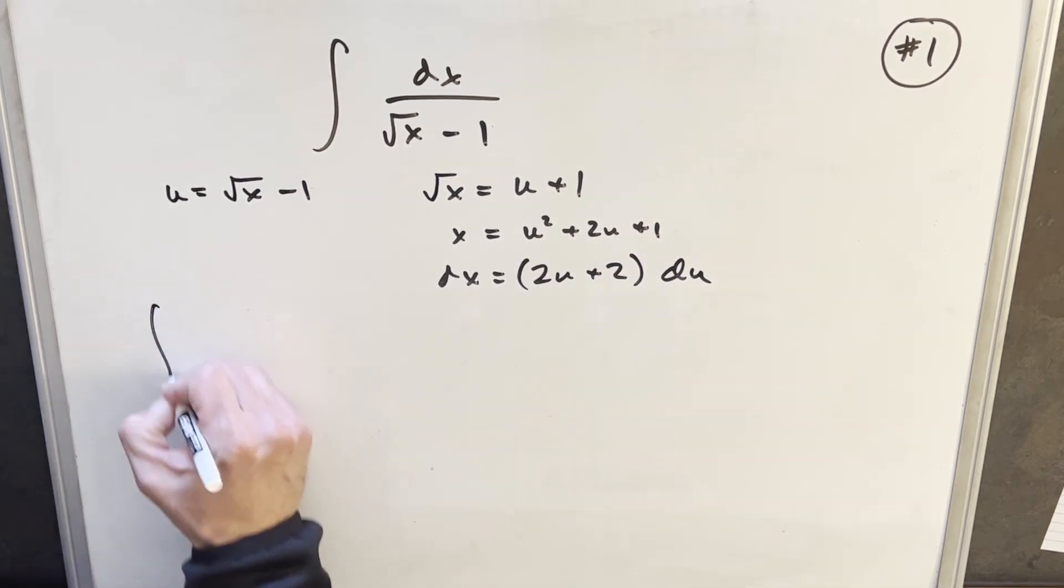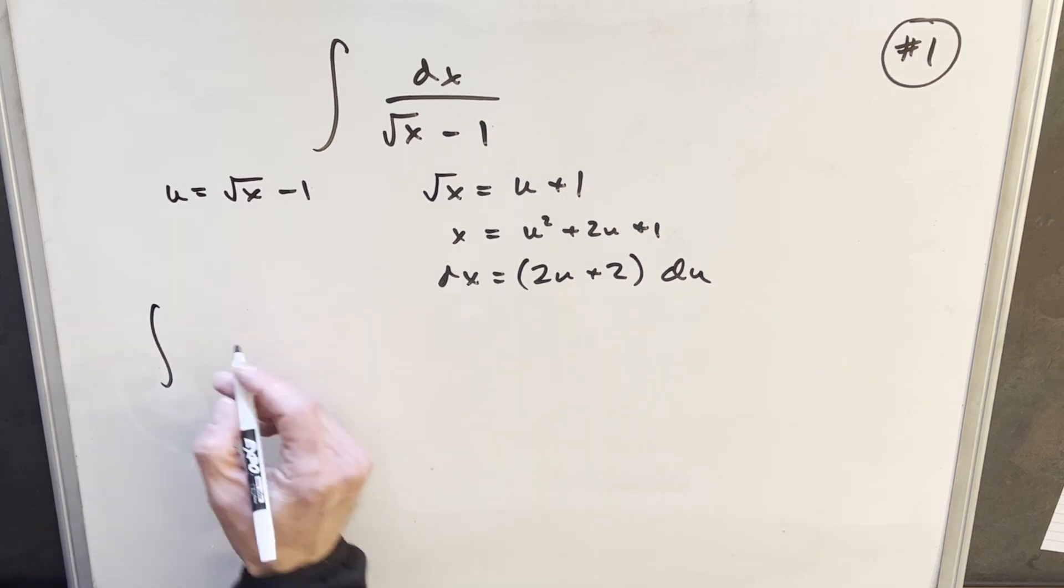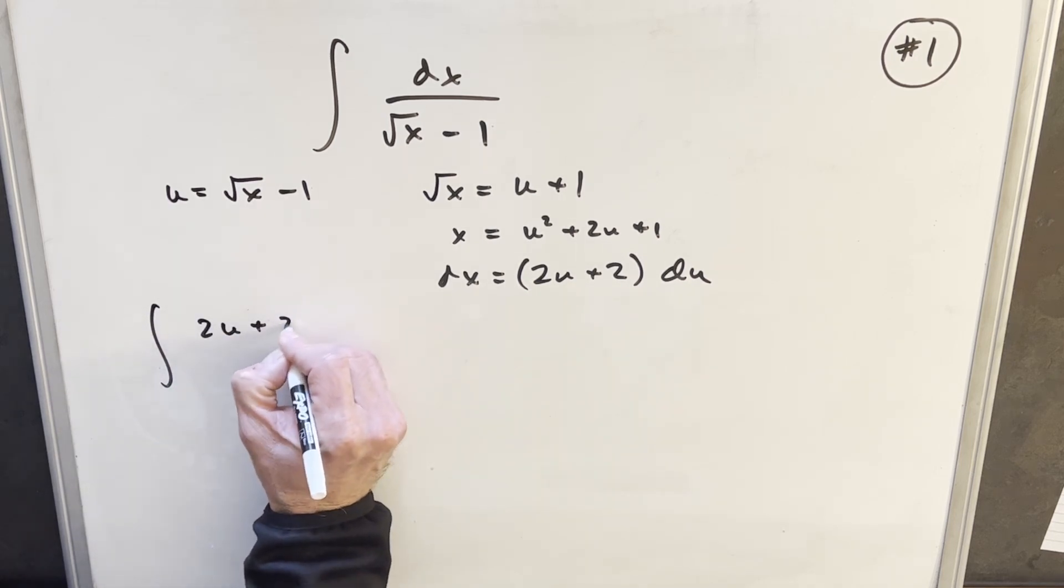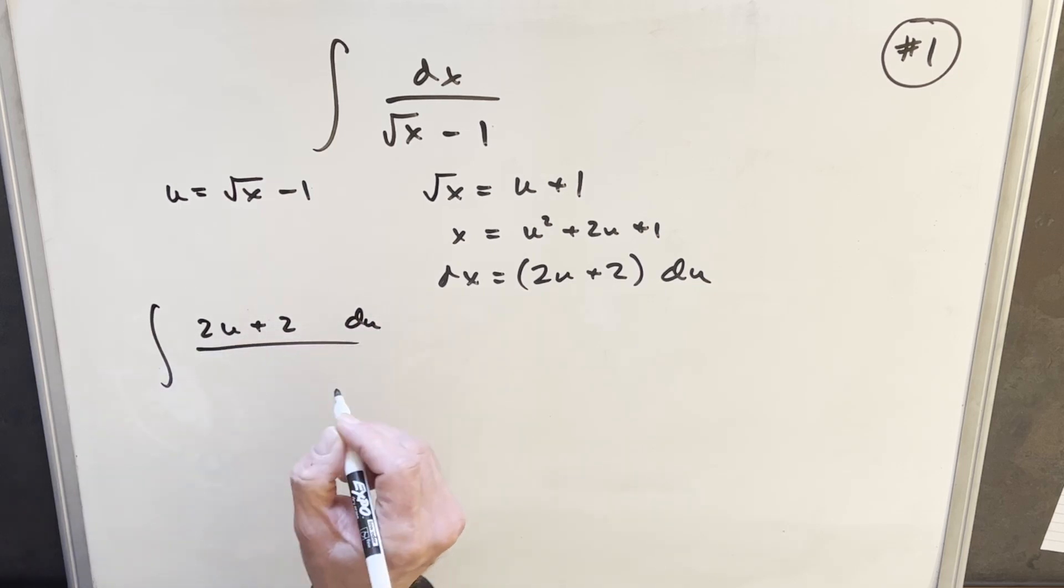Now I'll make the substitution. For dx in the numerator, we have 2u plus 2 du, all over the denominator u.